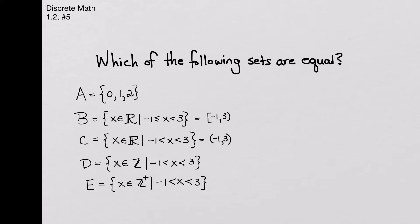Now, set D. Set D is the set of values of X that are integers, and so we see this symbol Z, and that's the symbol for the set of integers, just like R is the symbol for the set of real numbers. Now you've probably seen the set R before, maybe, maybe not, but the symbol for the set of integers is a little less common. So we're saying here X is an integer, and X is between negative 1 and 3.